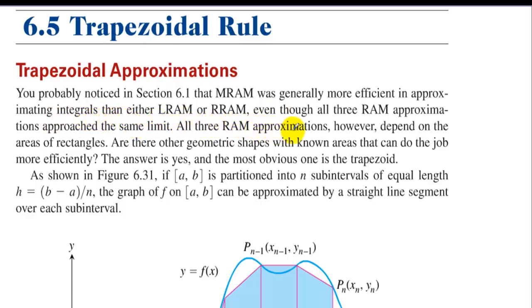All three RAM approximations, however, depend on the areas of rectangles. Are there other geometric shapes with known areas that can do the job more efficiently? The answer is yes. The most obvious one is the trapezoid.